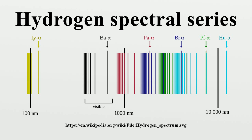Spectral emission occurs when an electron transitions, or jumps, from a higher energy state to a lower energy state. To distinguish the two states, the lower energy state is commonly designated as n, and the higher energy state is designated as n'. The energy of an emitted photon corresponds to the energy difference between the two states. Because the energy of each state is fixed, the energy difference between them is fixed, and the transition will always produce a photon with the same energy.